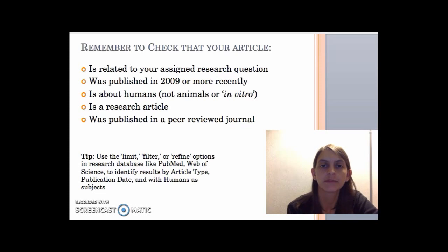So a tip for identifying if it does meet some of these criteria, like the publication date or the article type, or human subjects. Many databases, like PubMed or Web of Science, even Summon, have options over on the left-hand side or the right-hand side that will let you choose a publication range or an article type. So those might help you sort through your results.